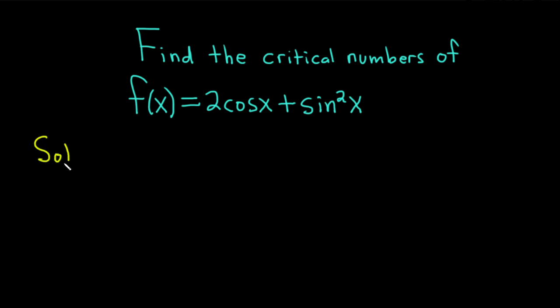Solution. Critical numbers are numbers in the domain of the function such that the derivative is 0 at those numbers or it's undefined. The domain of this function is all real numbers because we have cosine and sine and their domains are all real numbers. There's no division by 0 or anything like that, so let's start by taking the derivative.